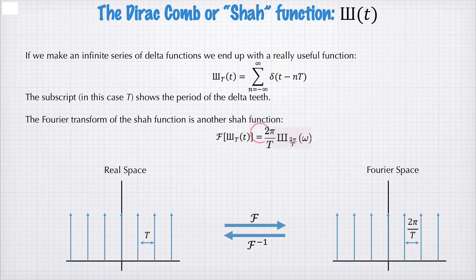The Fourier transform of a SHA is another SHA. So it looks like this. If we take the Fourier transform of this beast here with spacing capital T, in the Fourier domain, the spacing is 2 pi on T. And so the Fourier transform of this SHA function here with capital T as the spacing gives us a SHA function with spacing 2 pi on capital T and a normalization factor of 2 pi on T out the front.